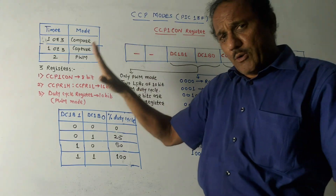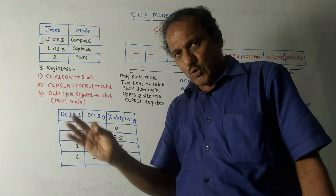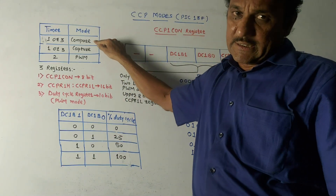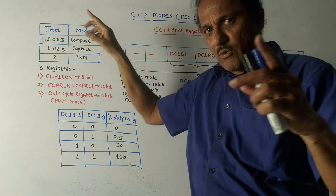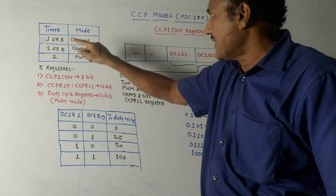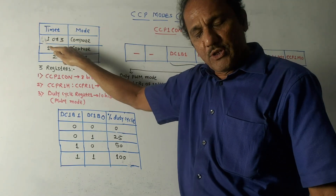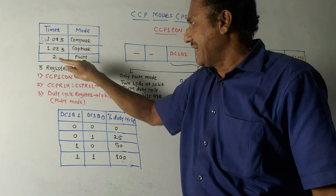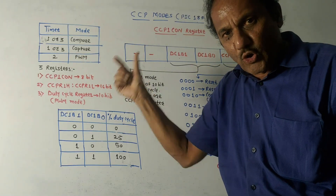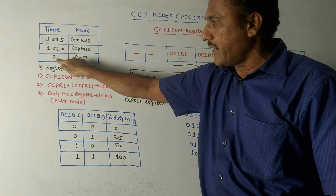We will be using Timer 1 or Timer 3 for compare and capture modes. For PWM — that is pulse width modulation — waveform generation, we will be using Timer 2.